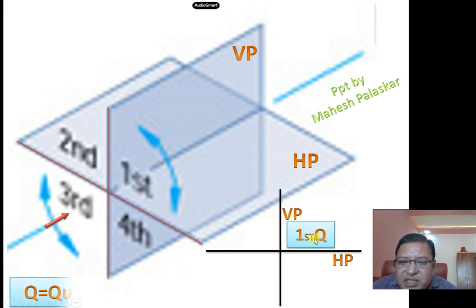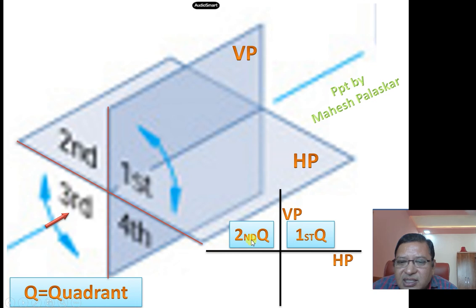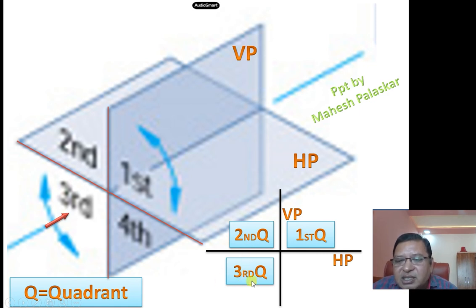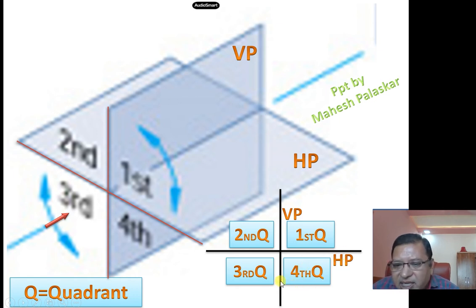So this space is the first quadrant — Q stands for quadrant. This space above HP and in front of VP is the first quadrant. Above HP and behind VP is the second quadrant. Behind VP and below HP is the third quadrant. Below HP and in front of VP is the fourth quadrant.